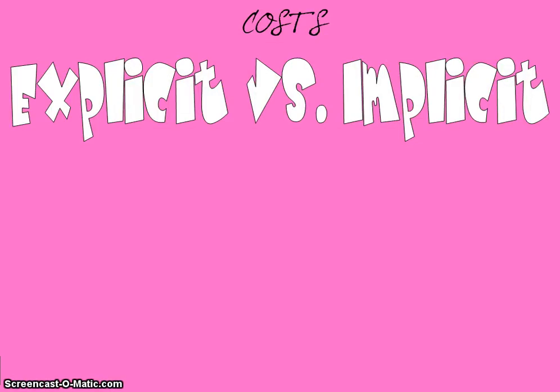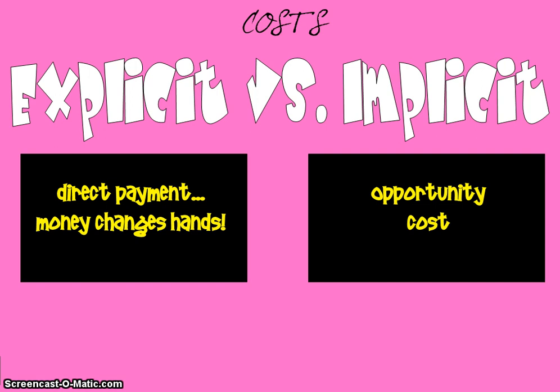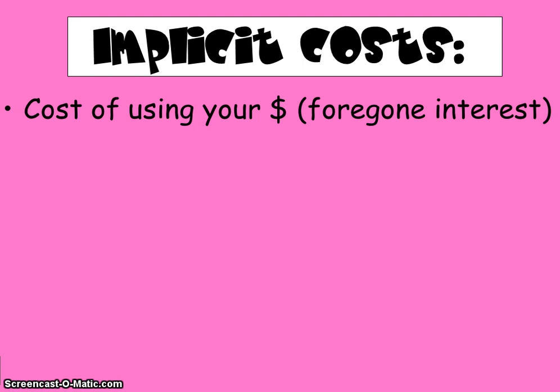Just a little bit of review from Unit 1: some costs are explicit and some costs are implicit. Explicit costs are when direct payments are made and money changes hands — so money costs are explicit costs. But implicit costs are things like opportunity costs, loss of opportunities to use your resources on other things. Some implicit costs of production would be like the cost of using your own money, such as foregone interest — if you were to have invested your money in the stock market but instead used that money to start your own company, you're giving up the chance to earn interest or dividends.